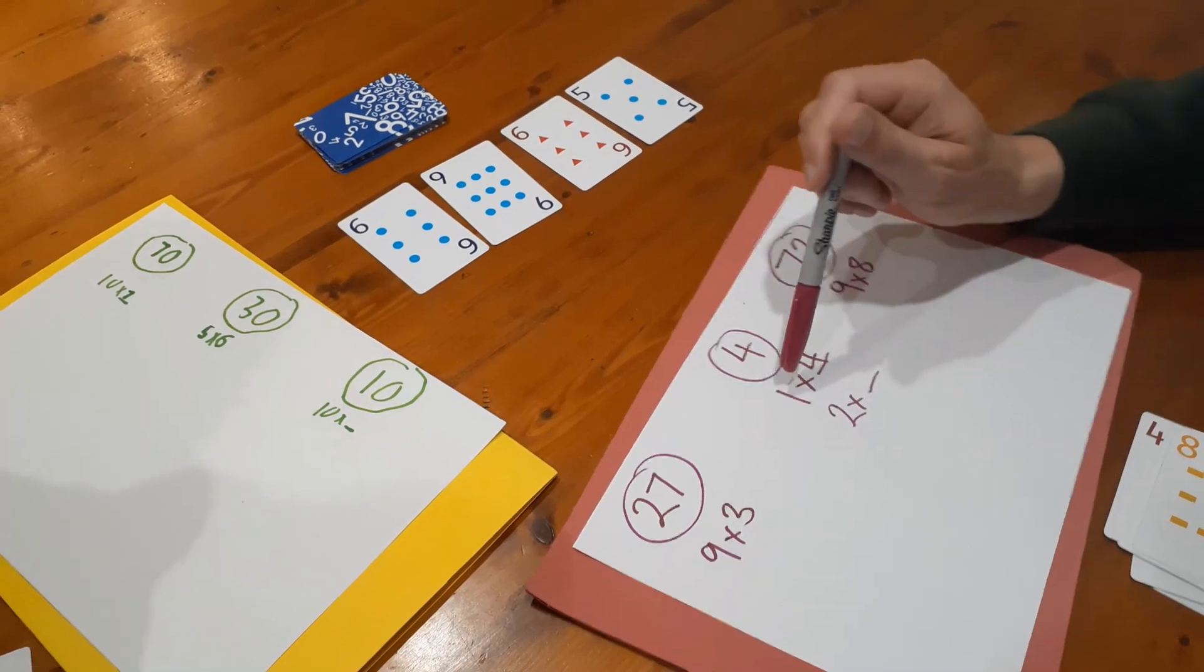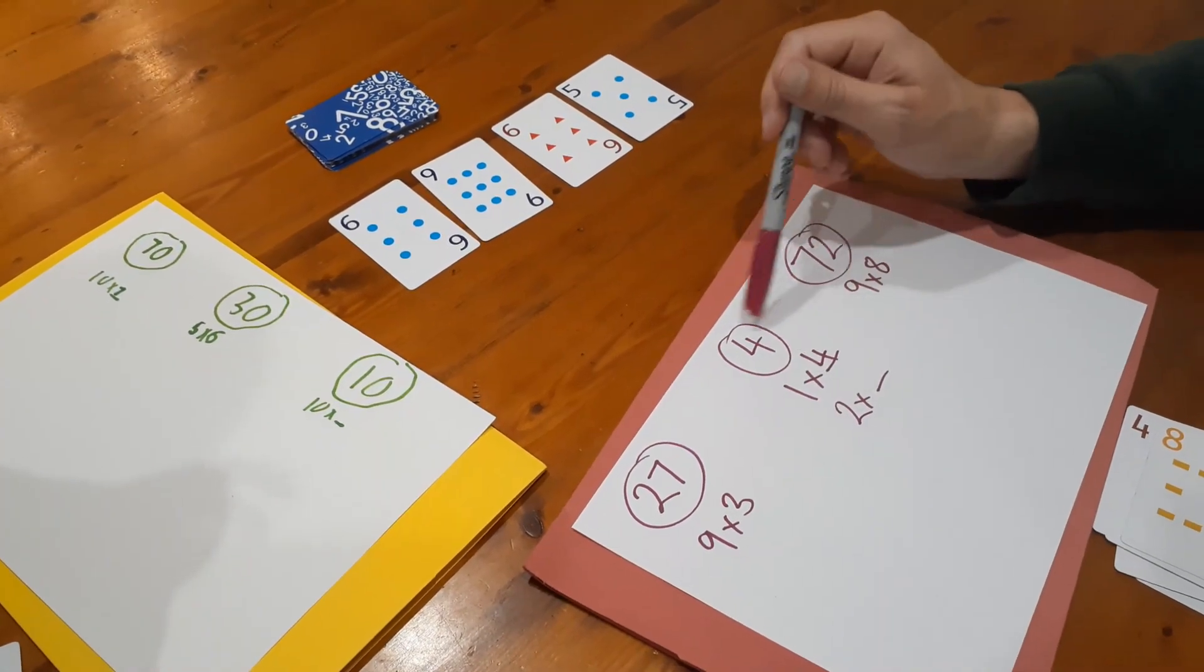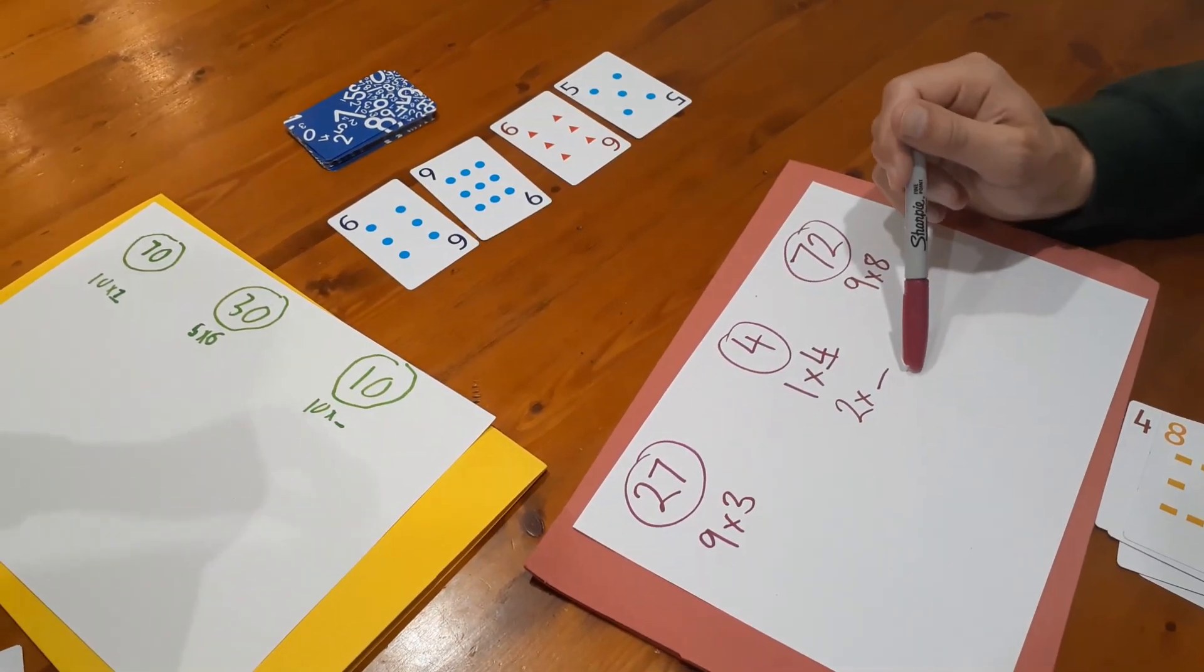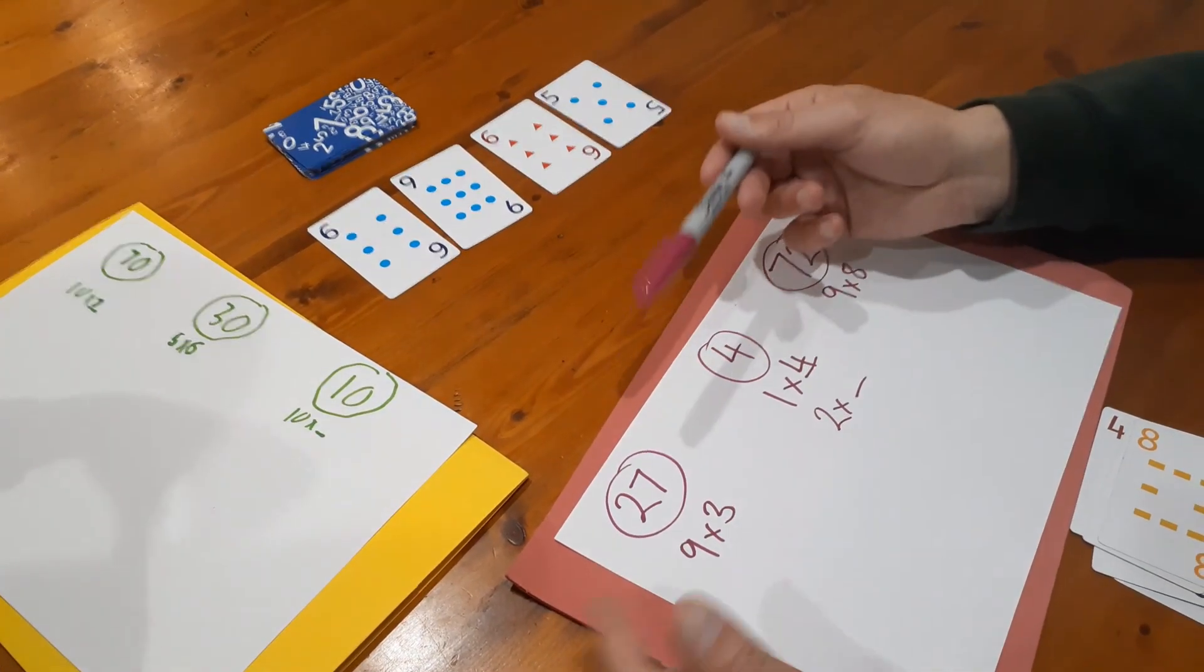Nasha's thinking just to be clear now that we've got one times four here I can't then use that equation again. So nine's been linked there. Nine can only go there once.